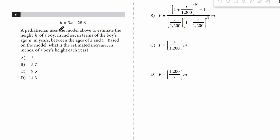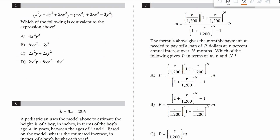Number 6. We have an equation. The question asks what is the estimated increase in inches of a boy's height each year. That's going to be the rate of change, which is always the number attached to the variable. So 3a — it's going to be 3. Our answer is A.